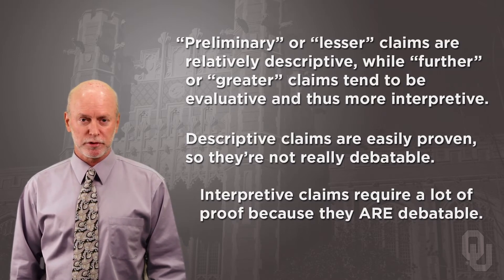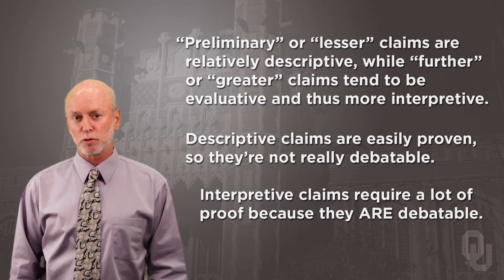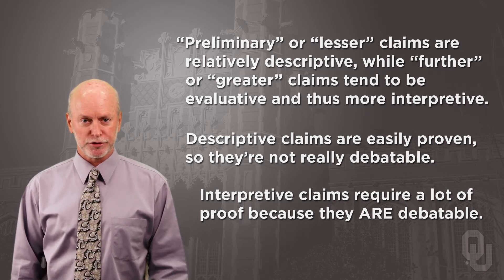Preliminary or lesser claims are relatively descriptive. All further or greater claims tend to be evaluative and thus more interpretive. Descriptive claims are easily proven, so they're not really debatable. Interpretive claims require a lot of proof because they are debatable — after all, someone else may evaluate the evidence differently and come out with a different interpretation, a different reading of the evidence. Writing about history requires both sorts of claims, the more descriptive and the more evaluative, because critical analysis always relies on both. The historian may present the facts of the case in a relatively dispassionate, objective manner, letting them speak for themselves or making basic inferences — what we call descriptive claims.